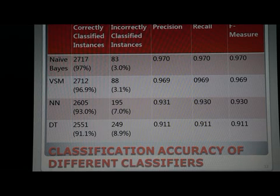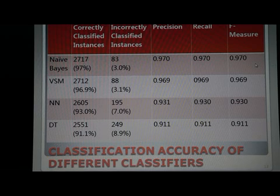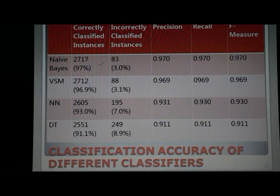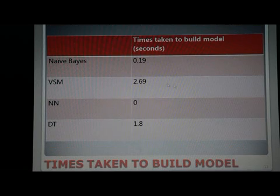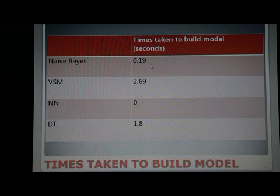A comparison was conducted based on the research paper 'Is Naive Bayes a Good Classifier for Document Classification?' As we can see from the table, the Naive Bayes classifier is proven to be the best document classifier through the implementation of different feature selection and classifier combinations. Naive Bayes achieves the best accuracy at 97%, and the fastest processing time of only 0.19 seconds.